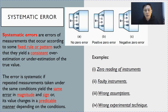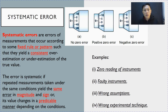Examples of systematic error, of course, include the classic one: zero error. In your practical handbook, you will be given more details about zero error. Other examples include faulty instruments, making wrong assumptions, and consistently using the wrong experimental technique.